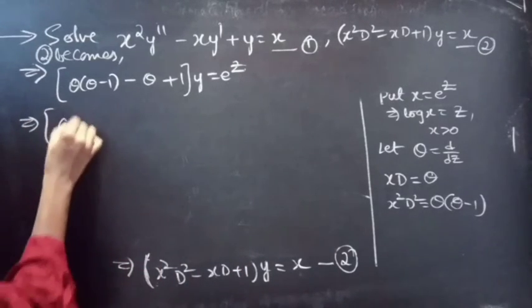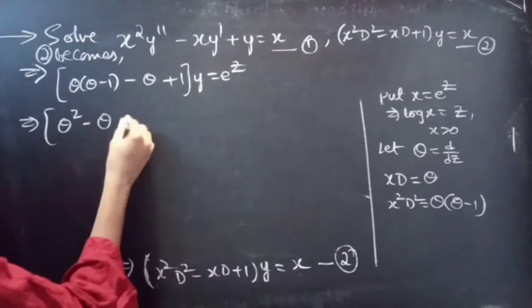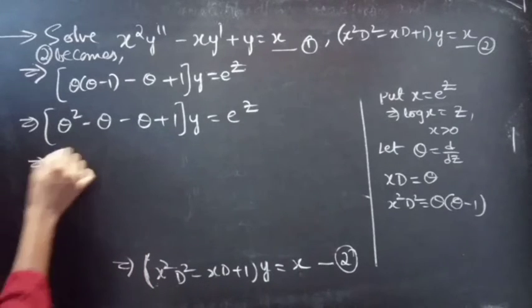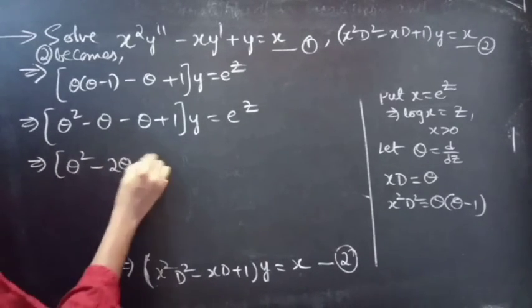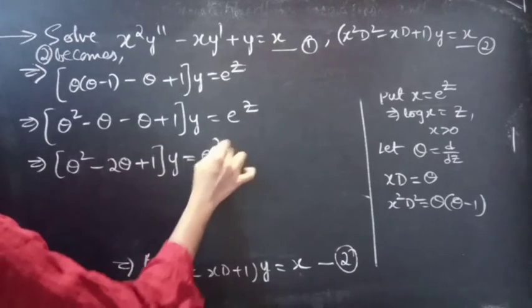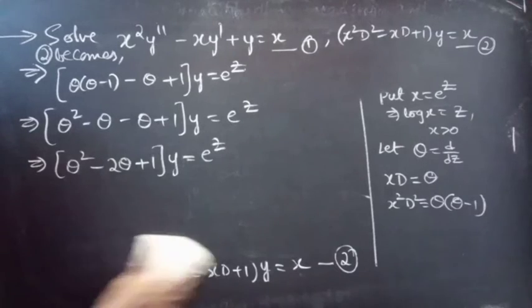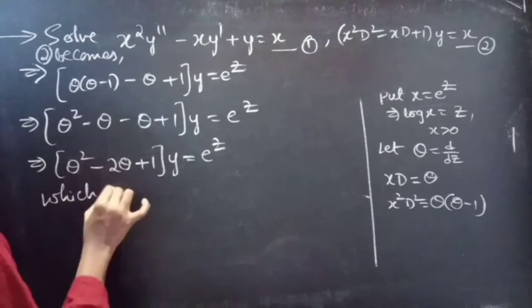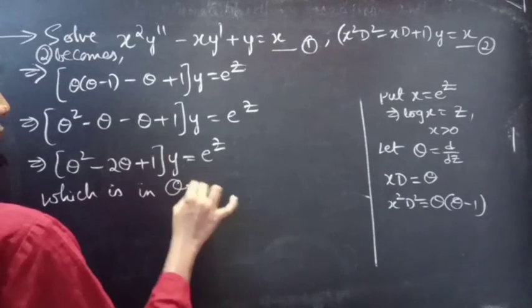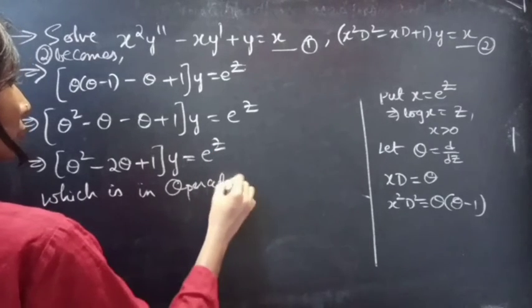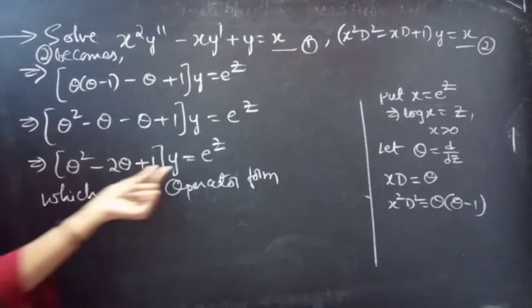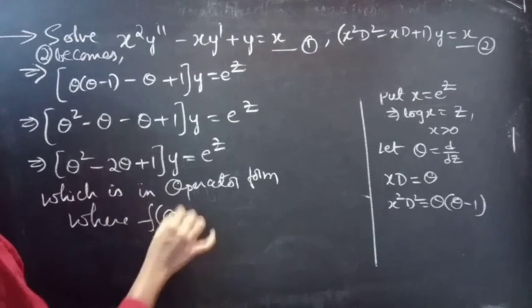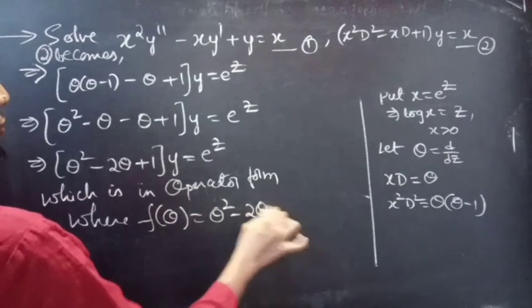After substitution, the equation becomes theta(theta minus 1) minus theta plus 1, into y equals e^z. Expanding: theta squared minus theta minus theta plus 1 gives theta squared minus 2 theta plus 1, into y equals e^z. This is the operator form where f(theta) equals theta squared minus 2 theta plus 1.